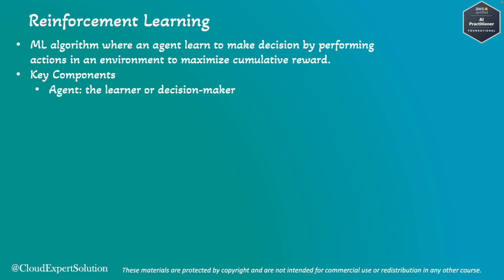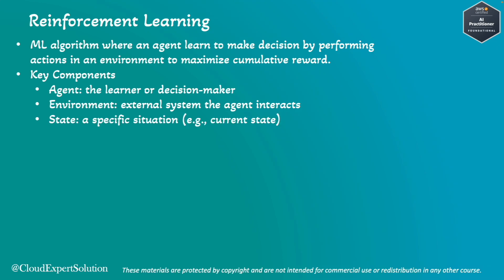In reinforcement learning, there are some key components. First, the agent — the learner or decision maker — could be a robot or a game character. The environment is the world the agent interacts with, such as a game board or a maze. The state is a specific situation in the environment, such as the agent's or robot's current position. Action is a move the agent can make, such as moving left, right, up, down, or jumping.